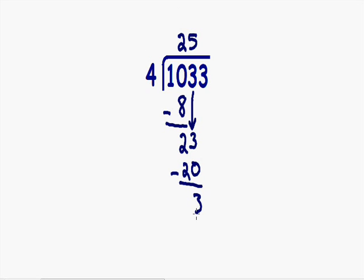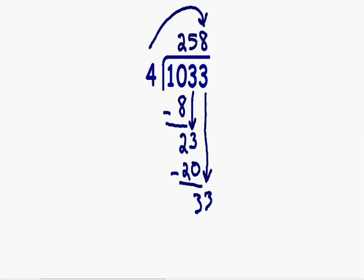We need to repeat all these steps again. So the next thing I'm going to do is bring down this next number 3. How many times does 4 go into 33? 4 goes into 33 eight times. 4 times 8 is equal to 32. If we subtract these two numbers, 33 minus 32 is equal to 1.